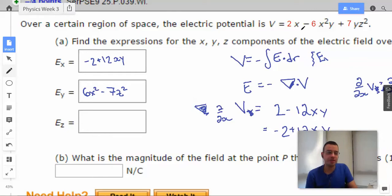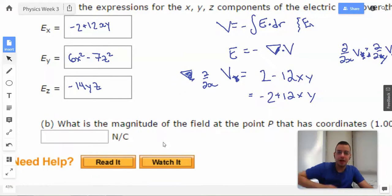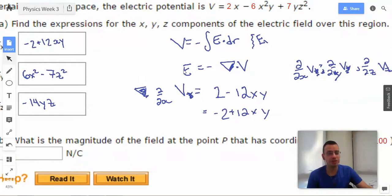Now with z, we have 2x which becomes 0, negative 6x squared y which becomes 0 because there's no z's involved. And then we have 14yz, and then we have the negative we have to put in as well. So we just take the divergence. I would not think too deeply about this one. I just memorized the formula. You know that if you take an integral to get the voltage, then you're going to have to take the derivative of the voltage to get the electric field.